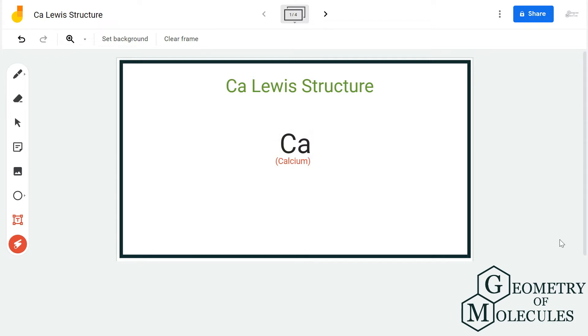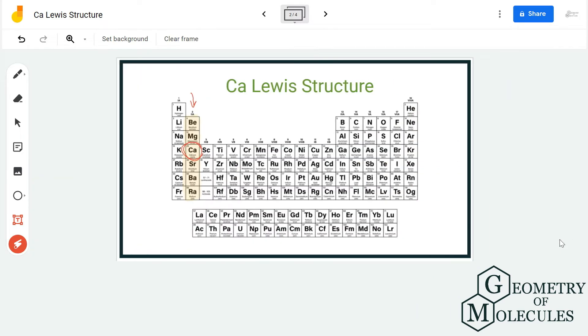Now to find out the Lewis structure for any element, you should know the number of valence electrons that element has. The valence electrons are the electrons that are present in the outermost shell of an atom that forms bonds with other atoms in the molecule.